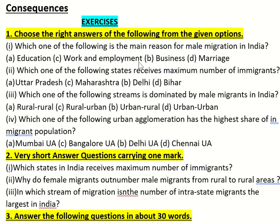Which one of the following states receives the maximum number of immigrants? We have discussed which state receives the most migrants in India. The options are: Uttar Pradesh, Maharashtra, Delhi, or Bihar.